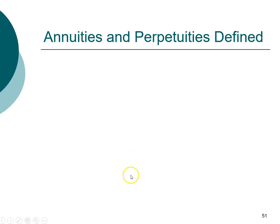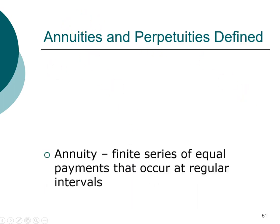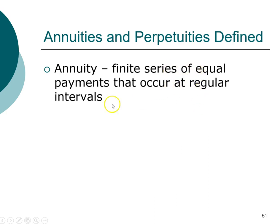Welcome back. In this module we're going to introduce two new types of cash flows: annuities and perpetuities. An annuity is defined as a set of cash flows that are the same amount occurring at regular intervals. This is probably the most common form of financial securities — your car payment, rent, and mortgage are all the same amount every month.